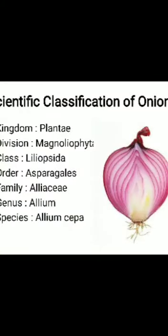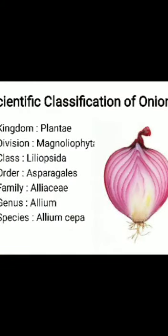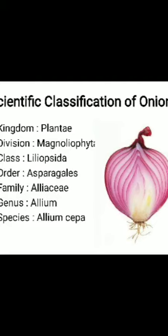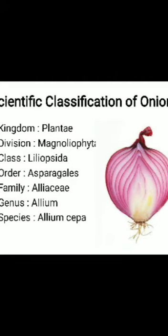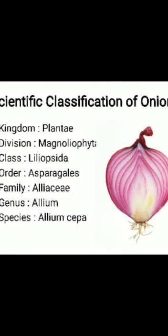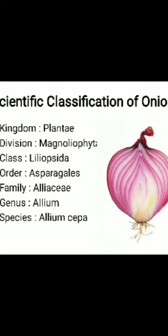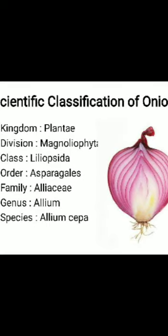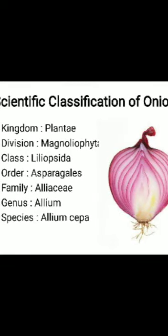Onion, which is known as Allium Sipa, commonly called bulb onion. It belongs to the family Alliaceae and is grown in warmer climate. It is considered as the most popular vegetable grown in the home garden.